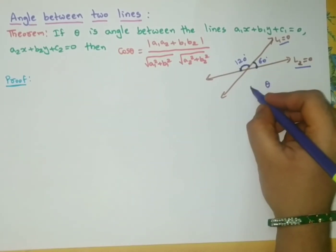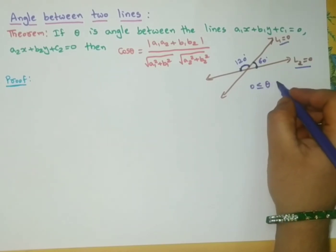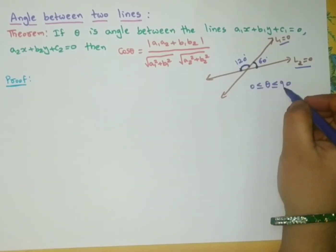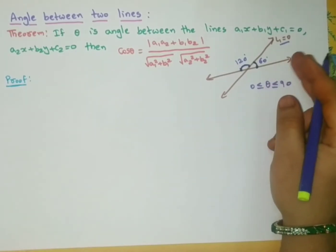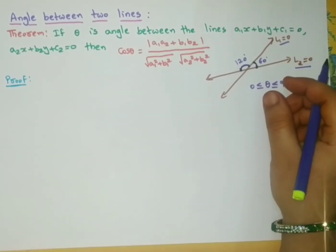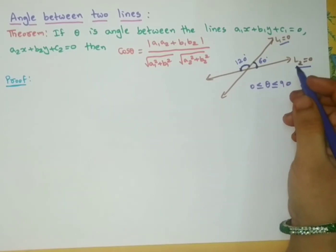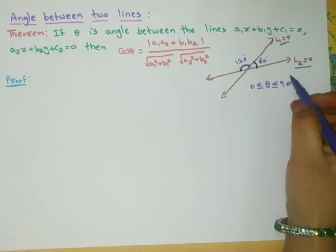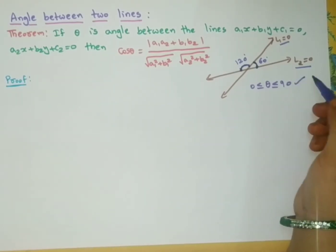Acute angle means the angle which lies between 0 and 90 degrees — 0 and 90 also included. If two lines coincide, then the angle between those two lines is 0. If two lines are perpendicular, then the angle between those lines is 90 degrees. We have to take the acute angle.